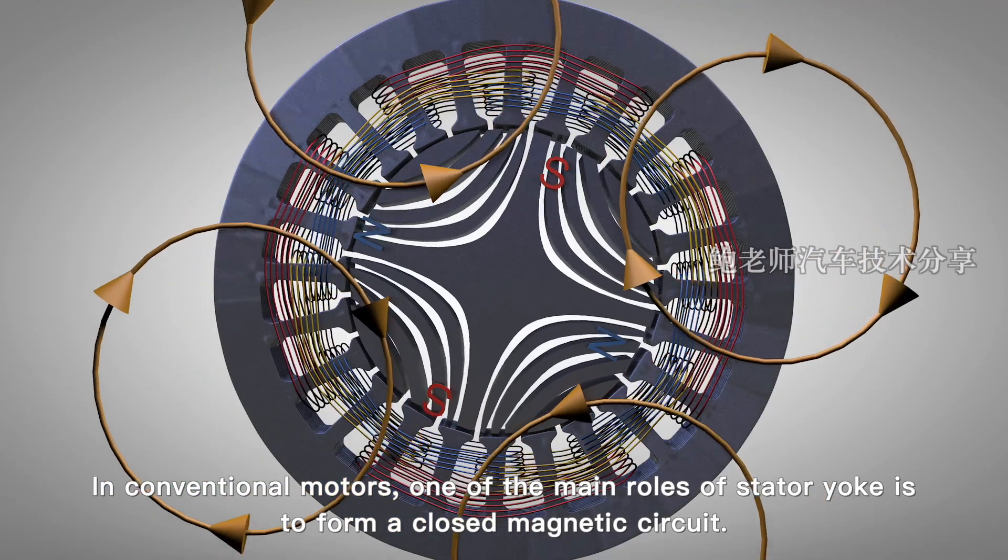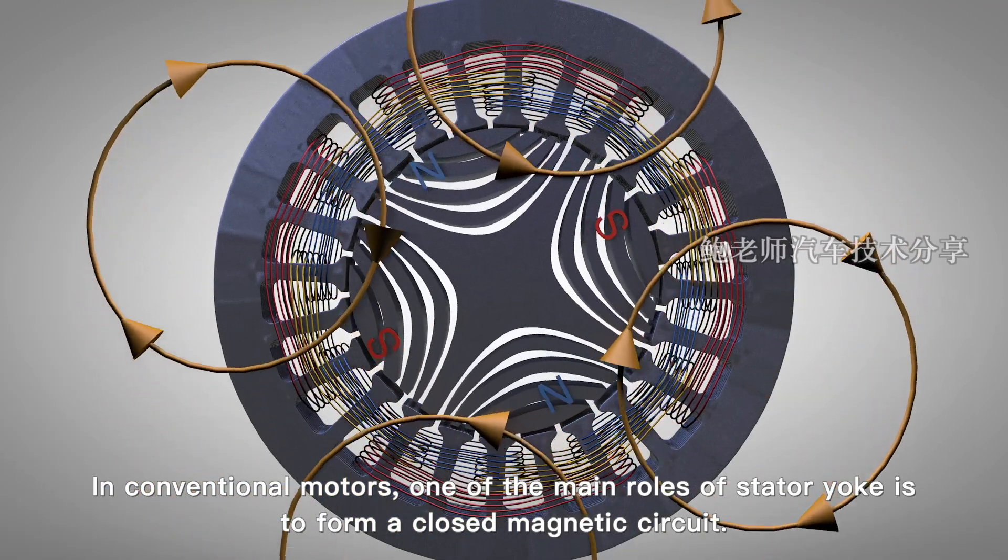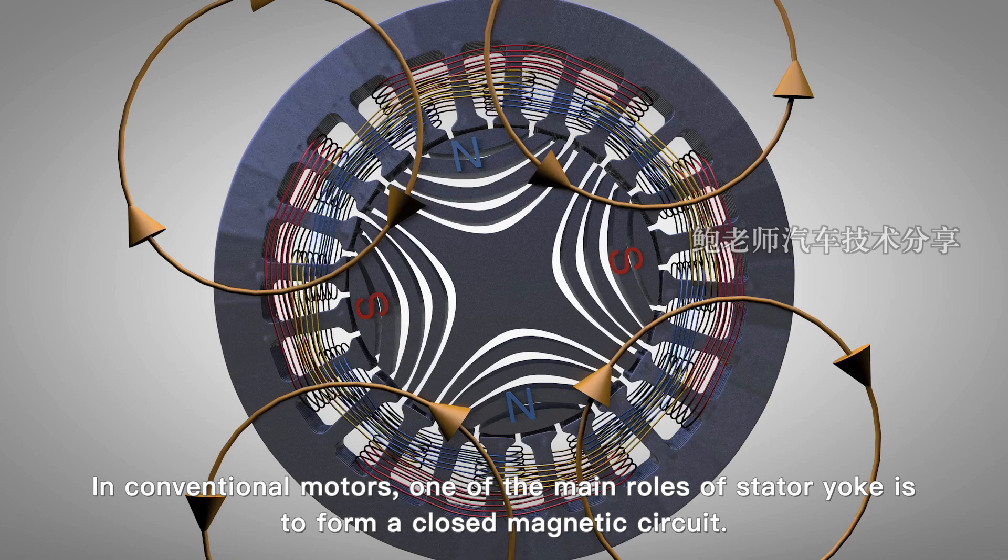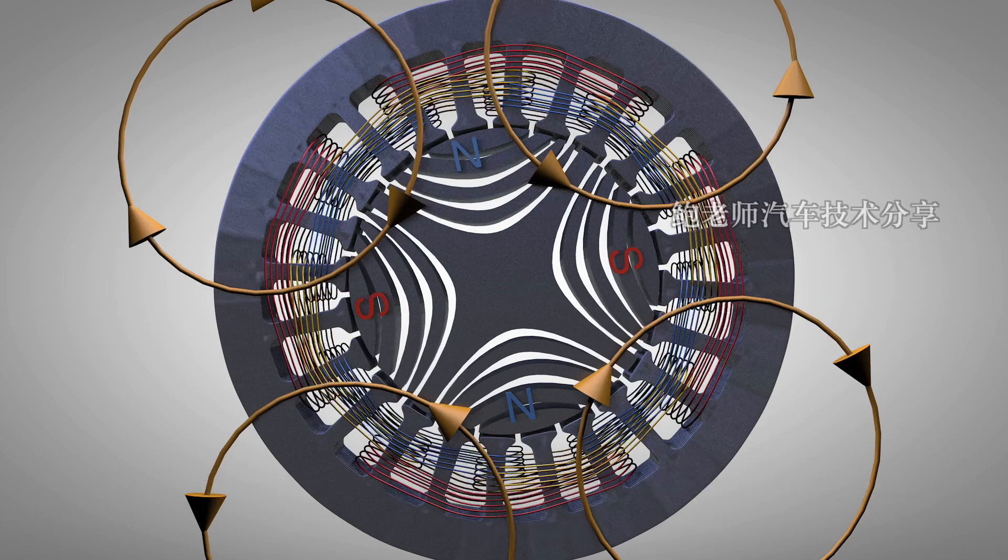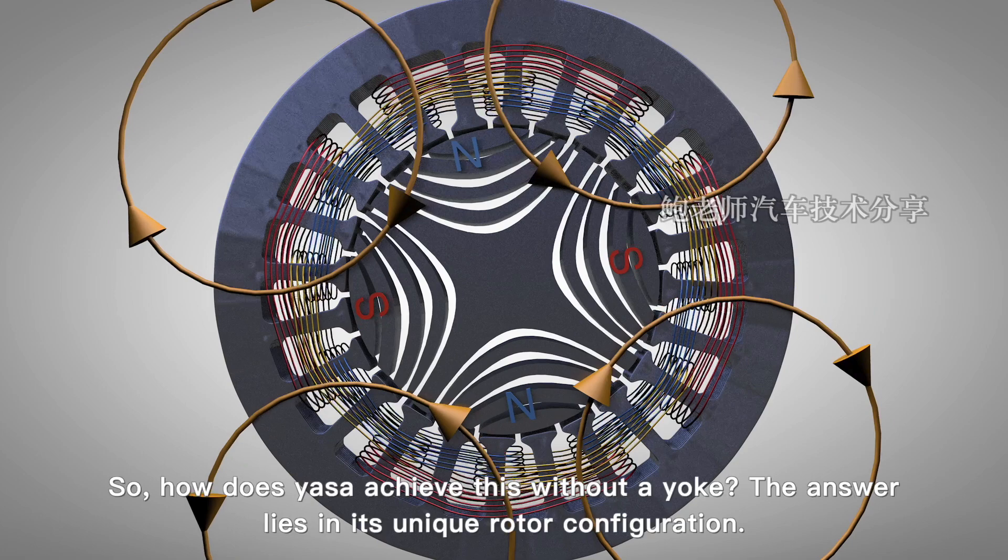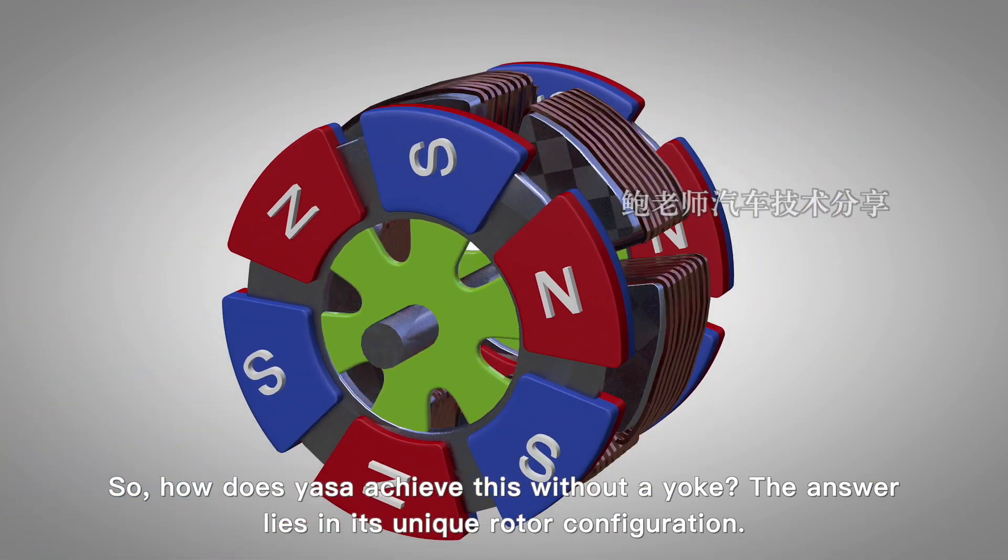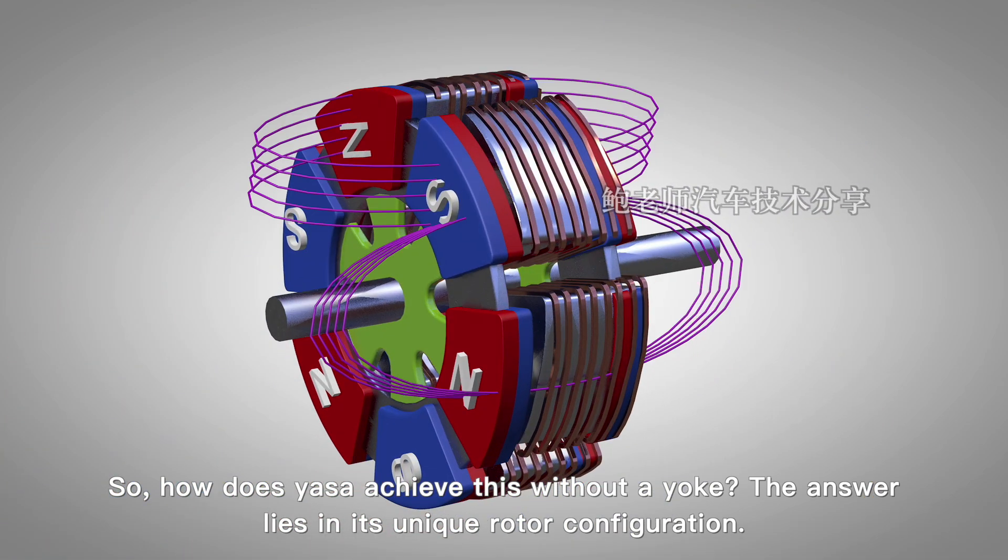In conventional motors, one of the main roles of stator yoke is to form a closed magnetic circuit. So how does YASA achieve this without a yoke? The answer lies in its unique rotor configuration.